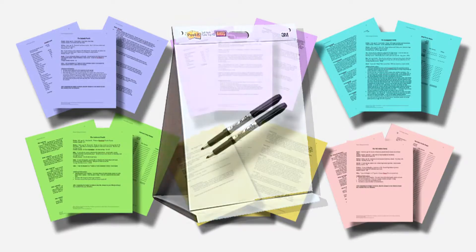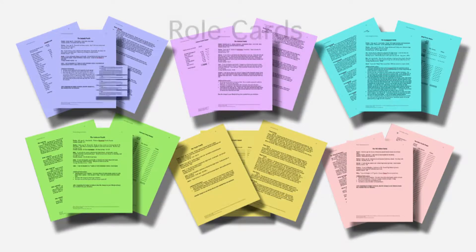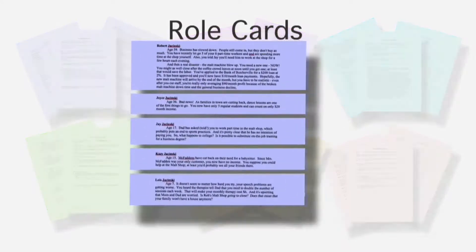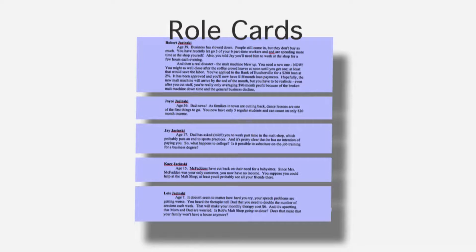This simulation is designed and works best with six families, each with five members. For large classes, you can duplicate one or more families, or add an extra member to some families and ask them to be the recorder or reporter. For smaller classes, you can make the family groups smaller than five, and have students play more than one role. For really small classes, you may want to remove one of the families from the game.